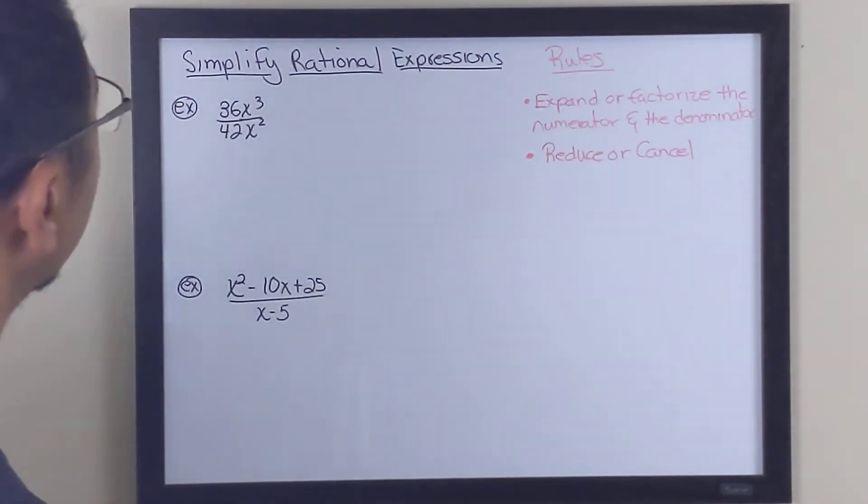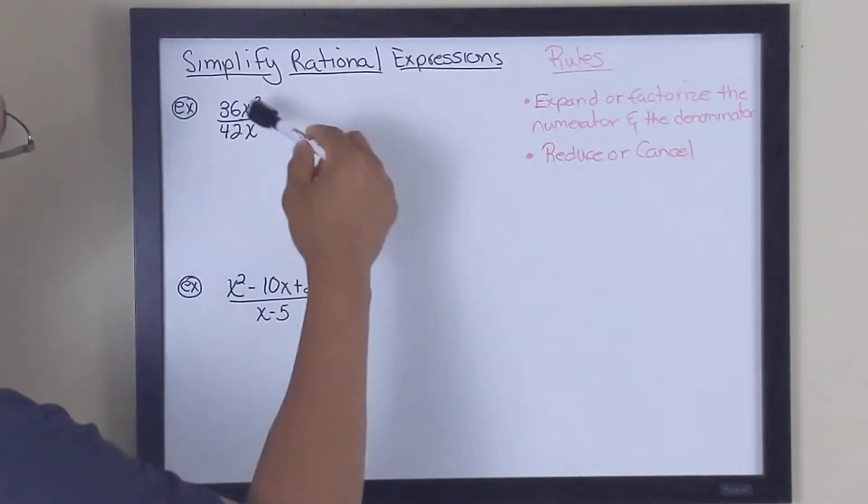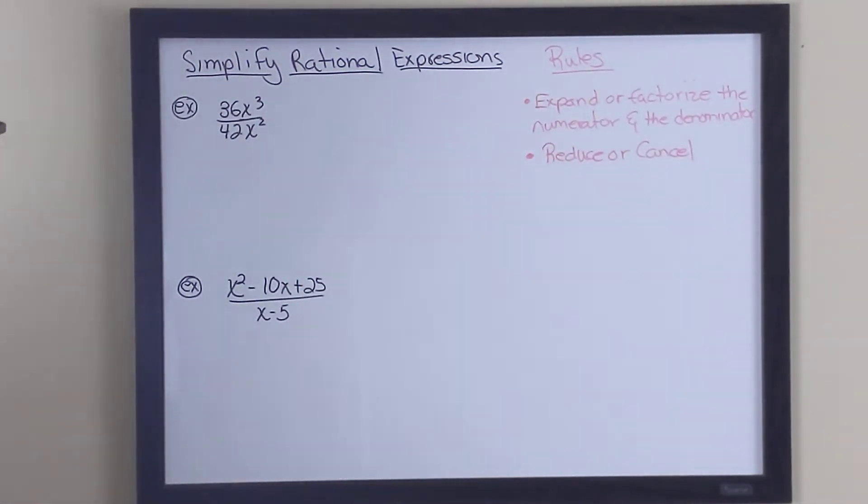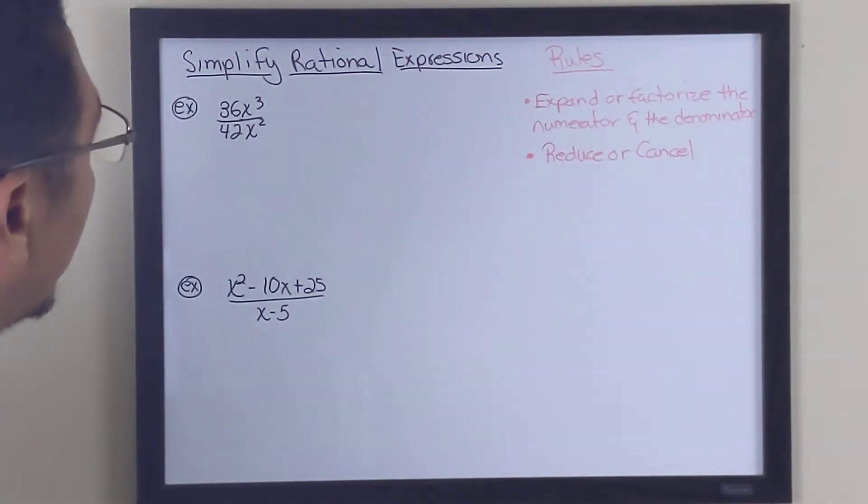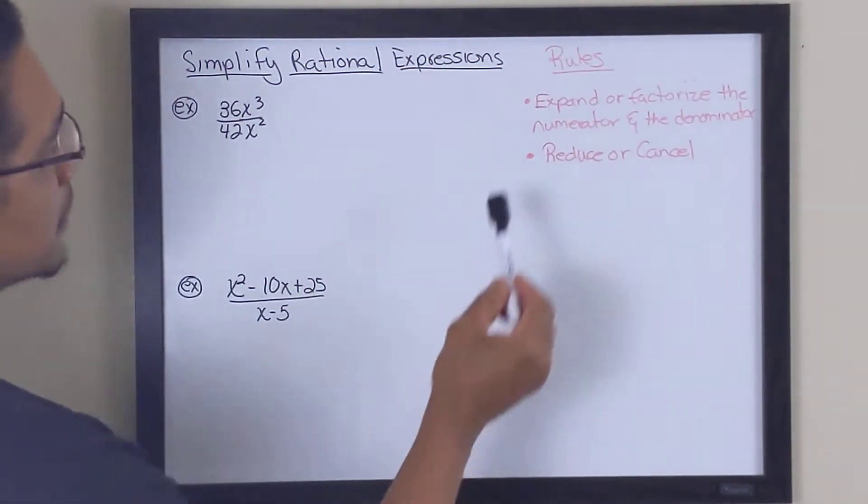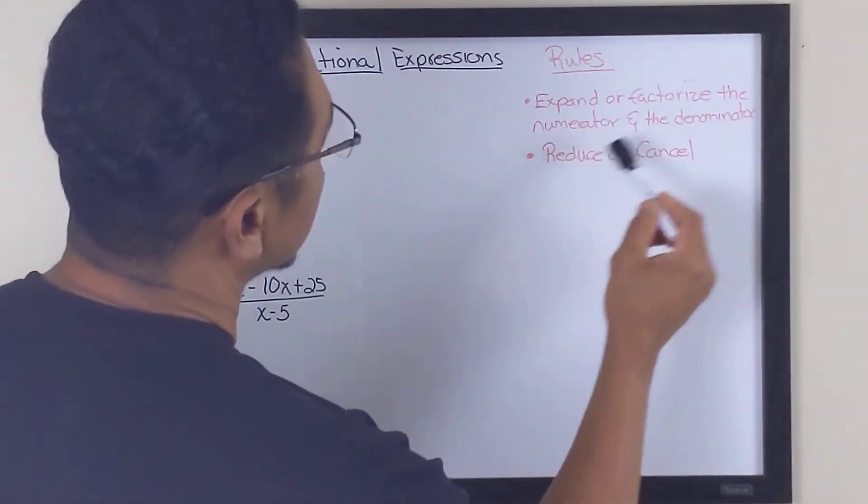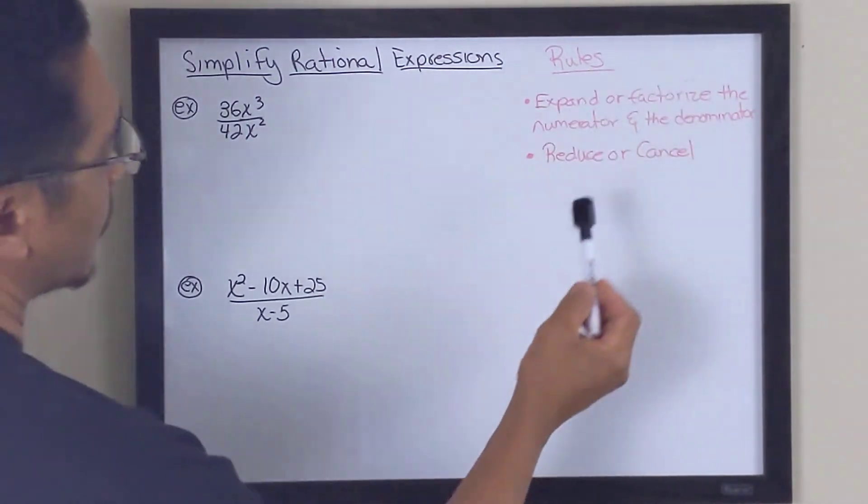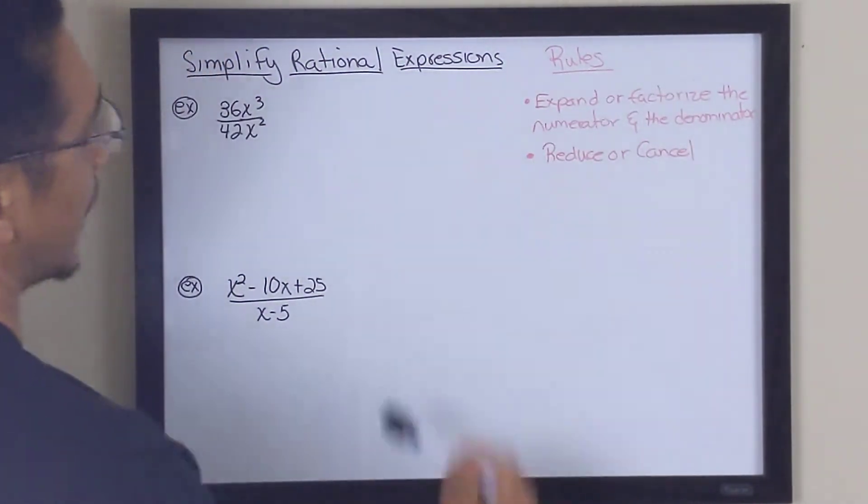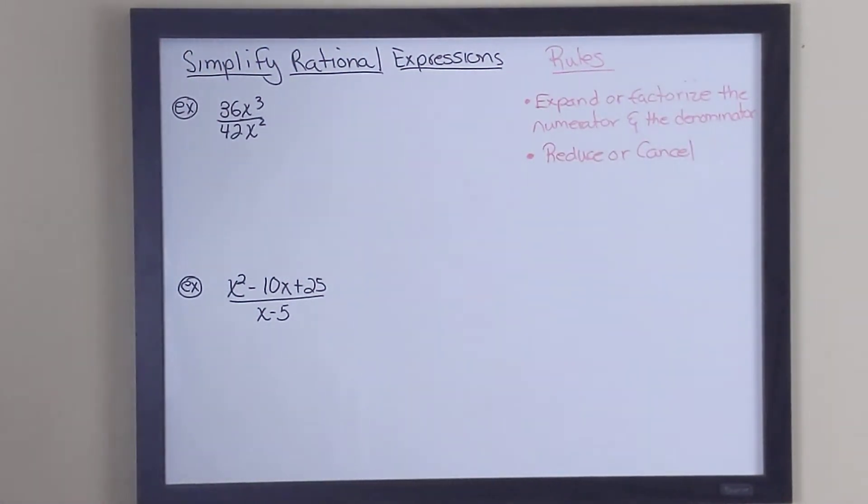So before we get started with trying to solve these two examples that I have here of rational expressions, there's a few rules that we need to remember so that we can actually solve these problems. Rule number one is we want to expand or factorize the numerator and the denominator. And once we've done that, we want to reduce or cancel whatever we need to cancel between the numerator and the denominators.